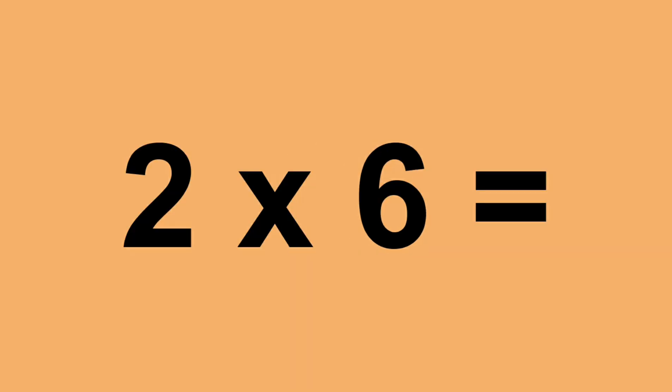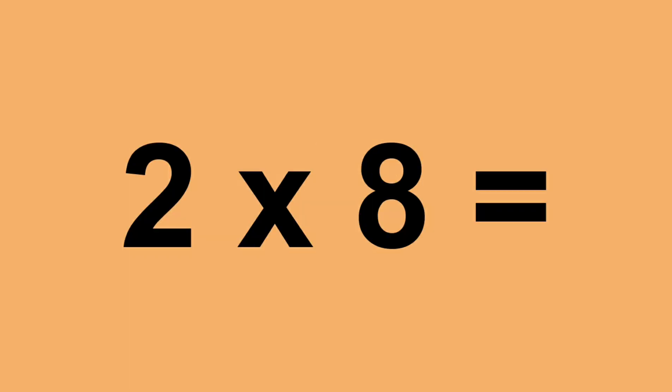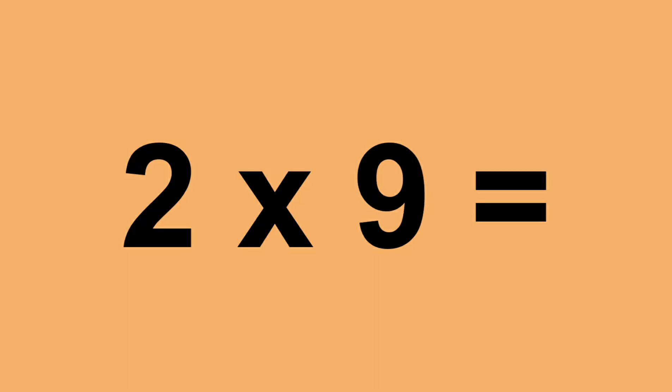Two times six equals twelve. Two times seven equals fourteen. Two times eight equals sixteen. Two times nine equals eighteen.